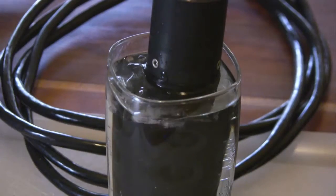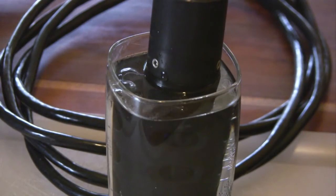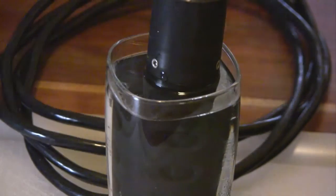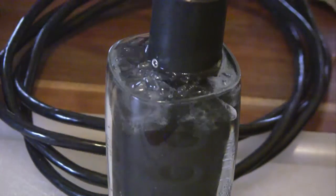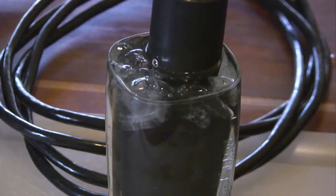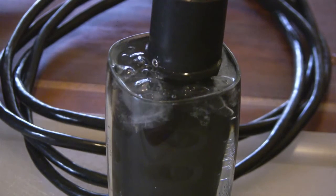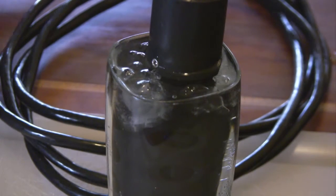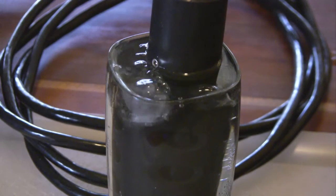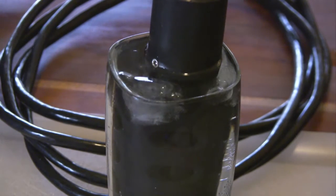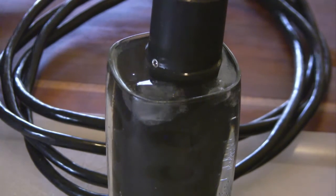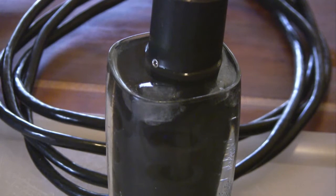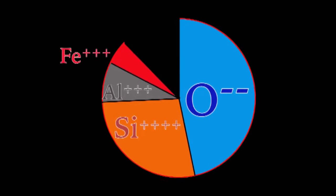Ice has a vitreous luster, a hardness of 1.5, and I honestly don't think I need to go through all the properties of ice, as I bet most of you will have no problem identifying it. So let's move on to the oxides of iron.